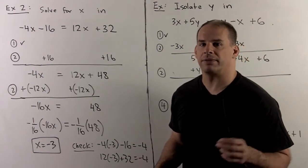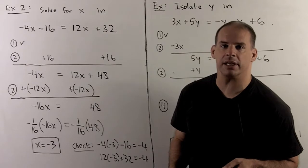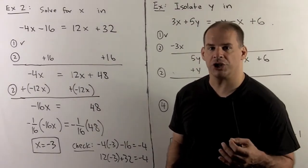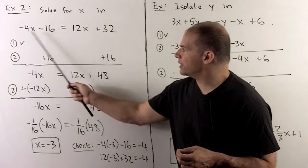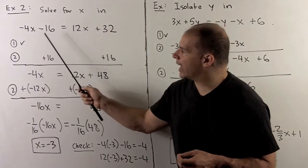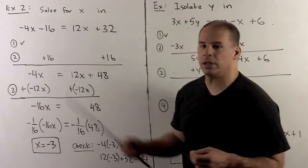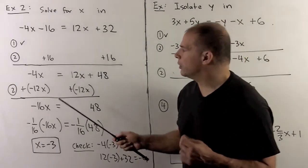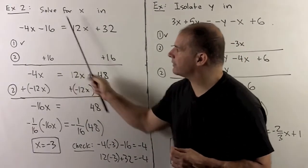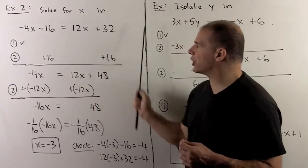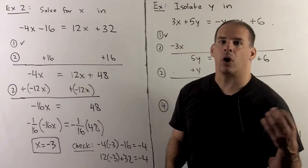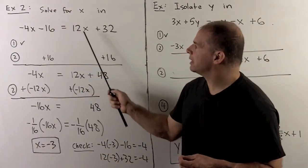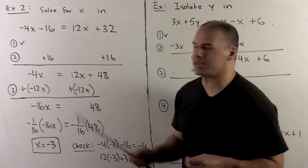Next, we solve for x in the equation -4x - 16 = 12x + 32. We go through our checklist. Step 1: we see if we can simplify. Here we have an x term and a non-x term on both sides, so they don't combine — step 1 is taken care of. We move to step 2: put all the x terms on the left-hand side, all the non-x terms on the right. So the rule says take the minus 16, push it to the right as a 16; take the 12x, push it to the left as a minus 12x.